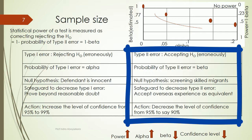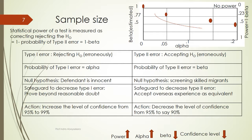For example, when screening skilled migrants for a country, you might accept overseas experience as equivalent to domestic experience. When you increase acceptance because your level of confidence has increased, you are erroneously accepting the null hypothesis — that is, accepting that overseas experience is equivalent to domestic experience. So we have to strike a balance between the two.